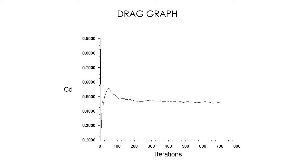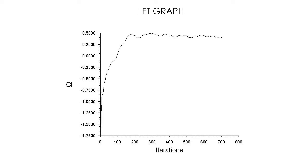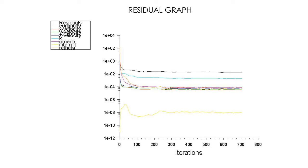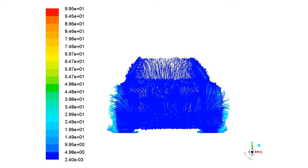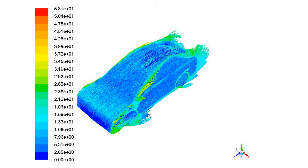For the pure luxury sedan, the drag coefficient is approximately 0.48, where there are no ABC pillars. The lift coefficient, calculated over 800 iterations, comes to approximately 0.487. The residual graph shows values coming linearly down, confirming correctness. These are the velocity path lines over the pure luxury sedan — you can see the variations around it.